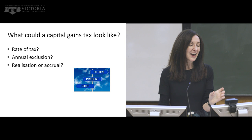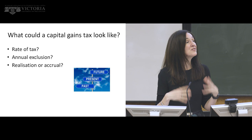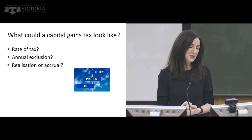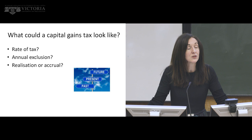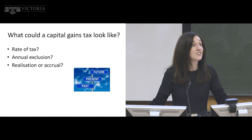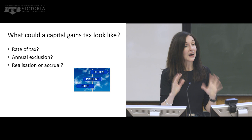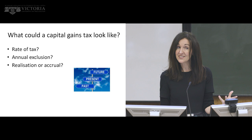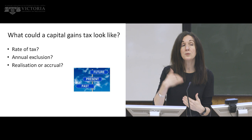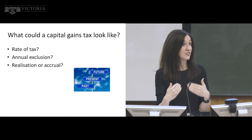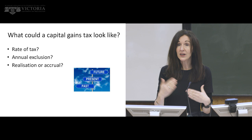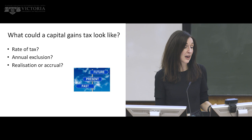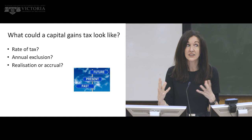Another thing to consider is realisation or accrual. Capital gains taxes are almost always realisation-based — meaning the tax becomes payable when the asset is sold. There are lots of sensible reasons for that: at that point the person has the cash to pay the tax. The other option is the accrual option, which means people pay the tax year-on-year as those gains accrue, even if they haven't actually sold the asset. Theoretically that's a very pure way of doing it; however, it does have an impact on cash flow. This is why capital gains taxes tend to be realisation-based — payable when that asset is sold.